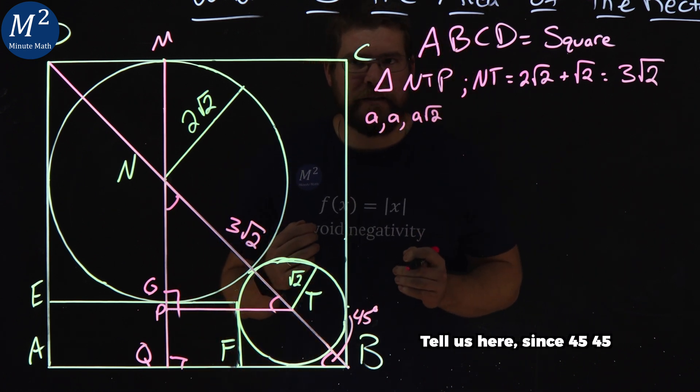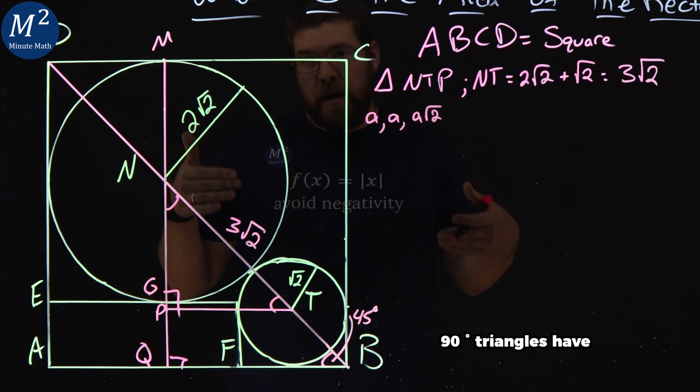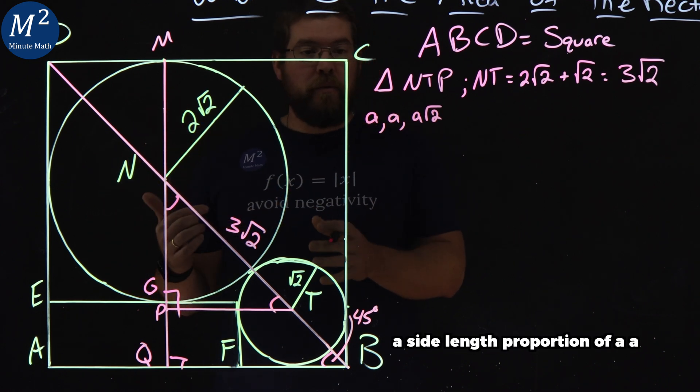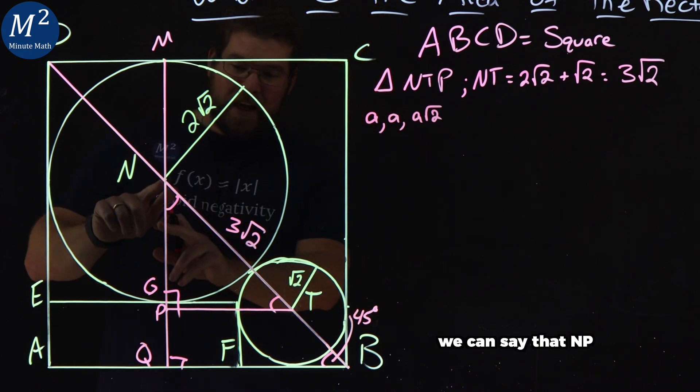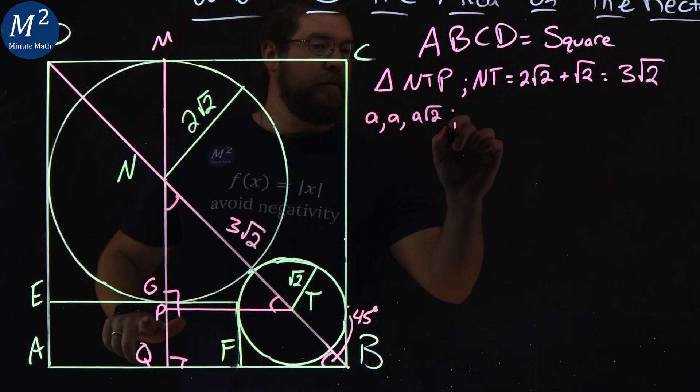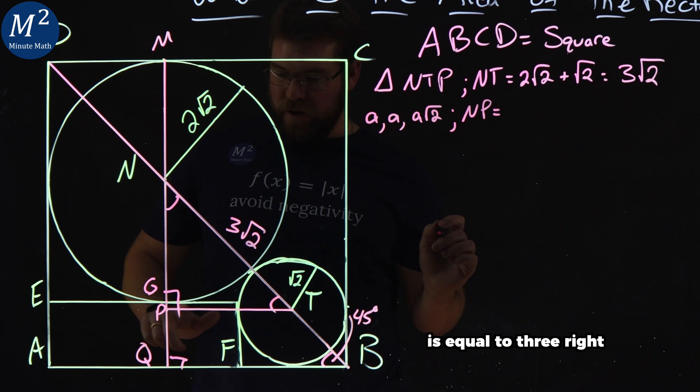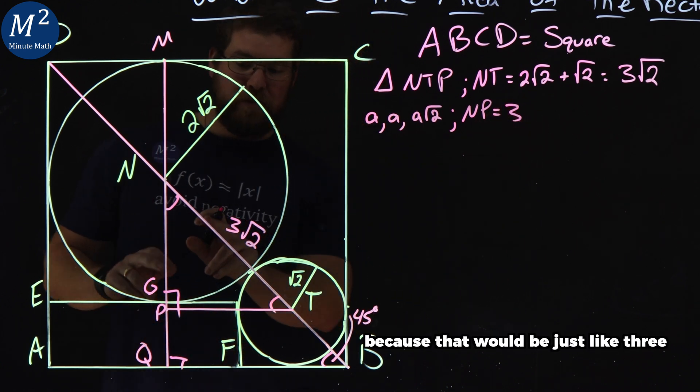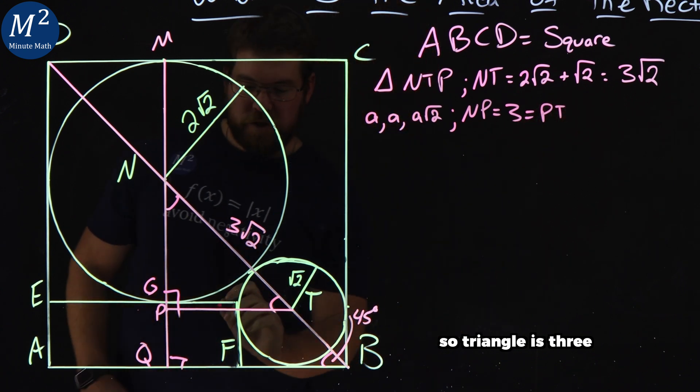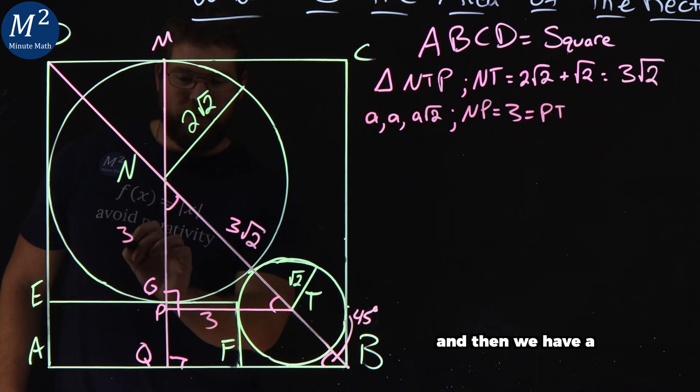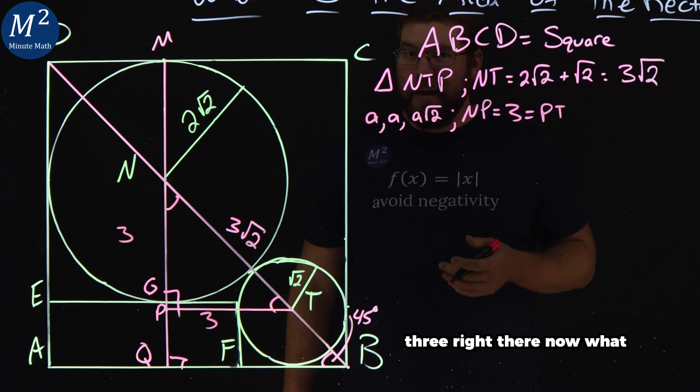So what does that tell us here? Since 45-45-90 degree triangles have a side length proportion of A, A, A√2, we can say that NP is equal to 3, right? Because that would be this length 3, which is equal to PT. So our triangle is 3 and then we have a 3 right there.